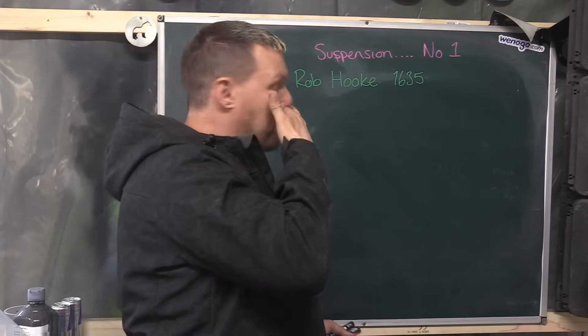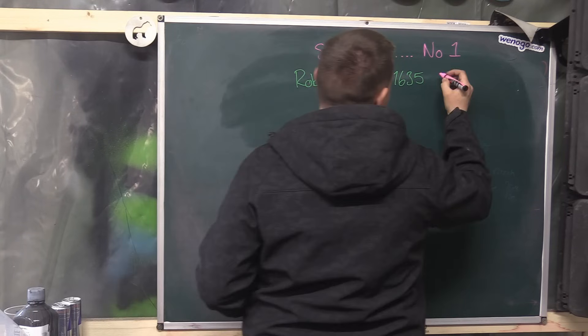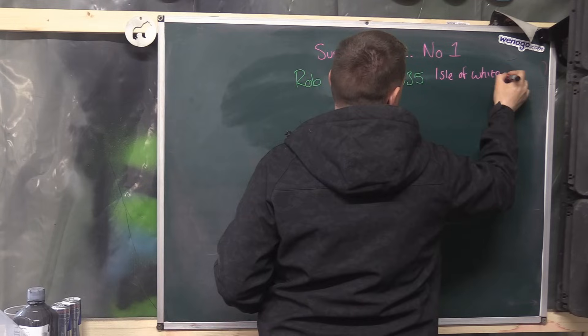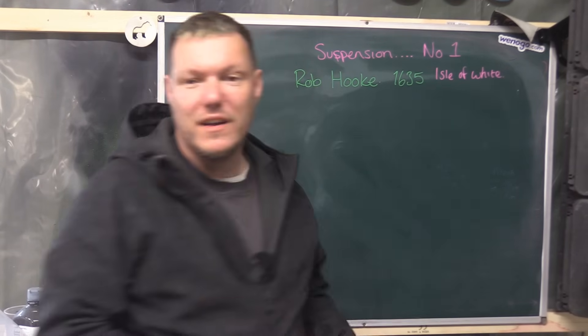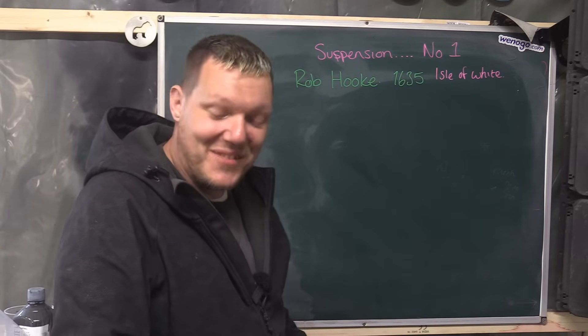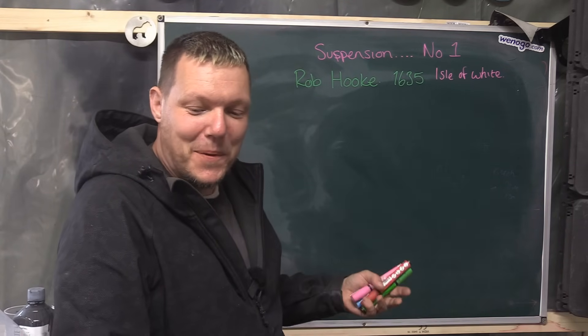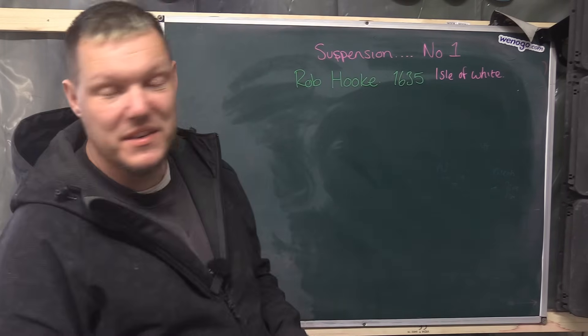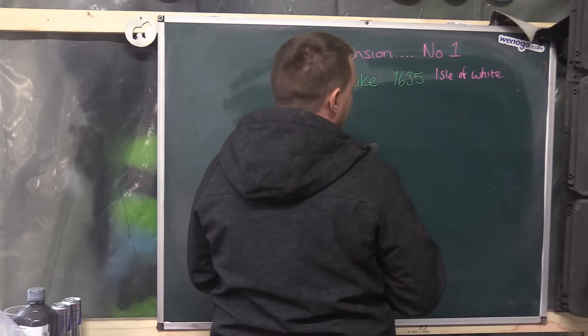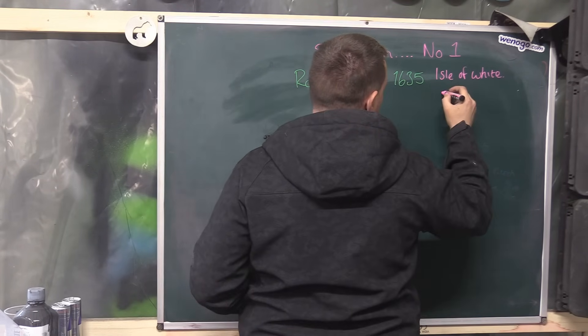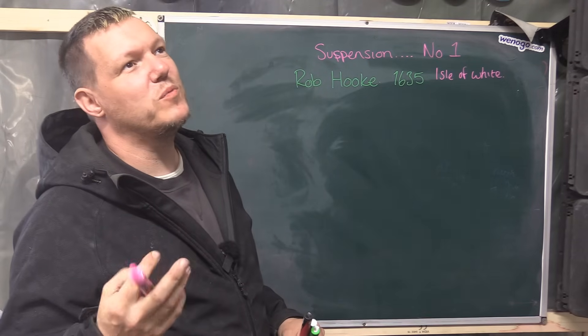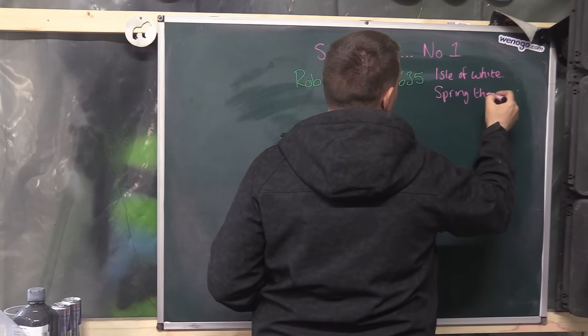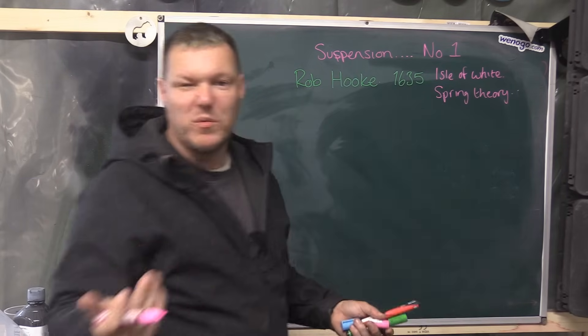And of course he's from the Isle of Wight. 1635, bit of a knob. But he discovered - I've got this big list of things that he did - but three things that I think are quite noteworthy of what old Rob did, Rob the knob, was he invented, he basically came up with spring theory. Let's just call it spring theory. Right, so this is what we're going to look at, Hooke's Law and all that.